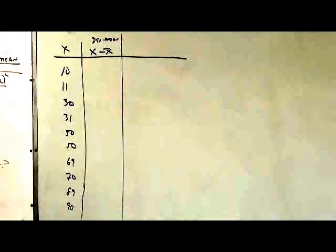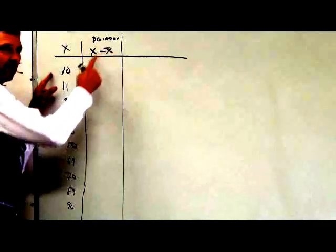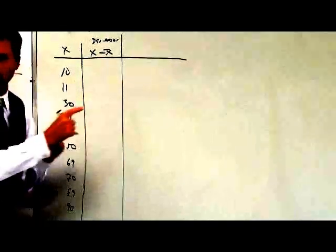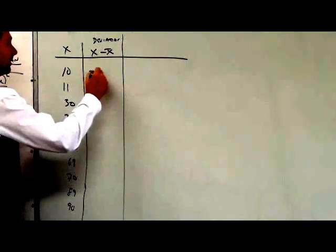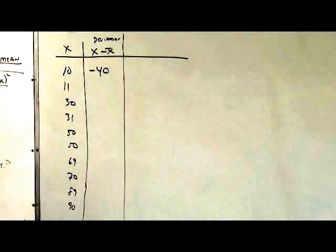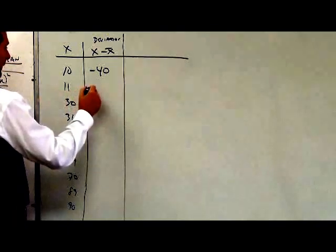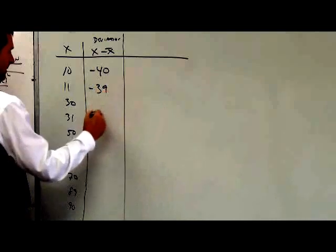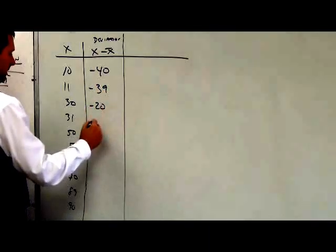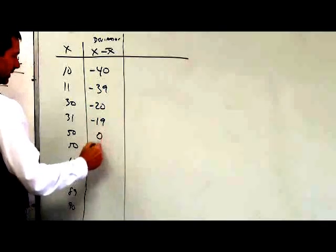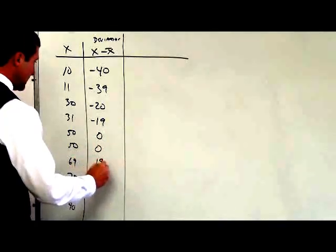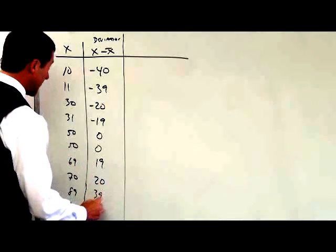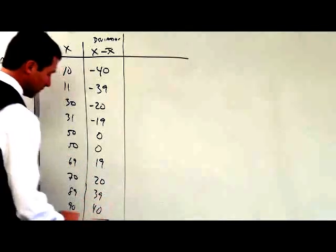What did you say the mean was? 50. So what is 10 minus 50? Careful! Negative 40. Very good. It's negative 40 — 10 minus 50. What do we got here? Minus 39? Minus 20? Minus 19? No difference at all there — those are the mean. Then 19, 20, 39, and 40. This data is actually perfectly symmetrical.